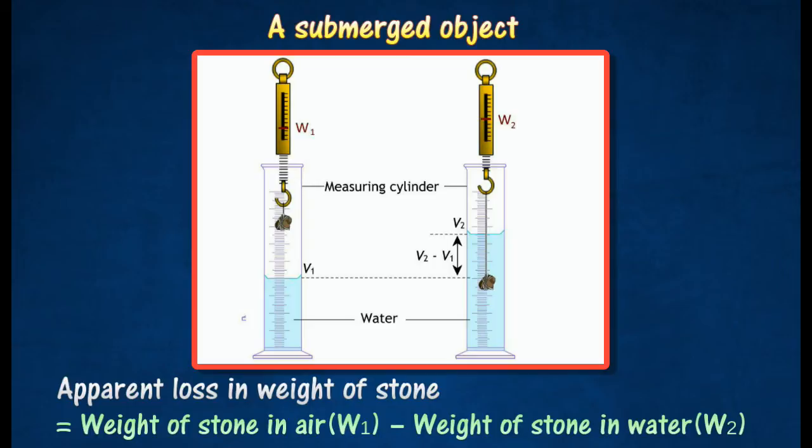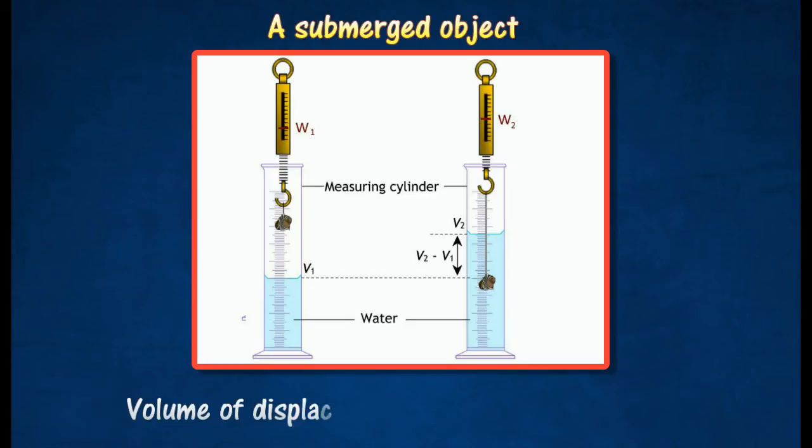The apparent loss in weight of the stone is caused by the buoyant force of the surrounding water on the stone. When an object is placed in water, the water level rises due to the displacement of water by the object. The object displaces the same volume of water as its own volume.